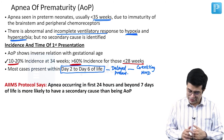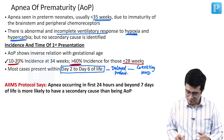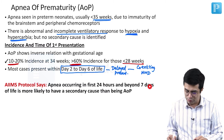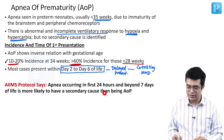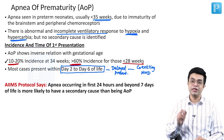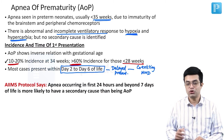Reiterating the EAMS protocol: apnea occurring in the first 24 hours and beyond 7 days of life is more likely to have a secondary cause than being apnea of prematurity.